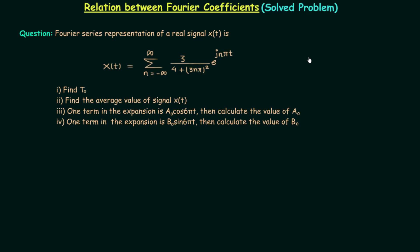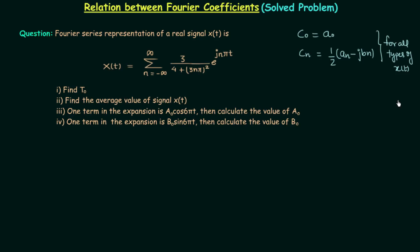In the last lecture we obtained the relation between Fourier coefficients: C0 is equal to A0, and Cn is equal to (1/2)(An - jBn). These two relations are valid for all types of signal x(t), whether real or imaginary. We also found An equals 2 times the real part of Cn, and Bn equals minus 2 times the imaginary part of Cn. These two relations are valid only for real x(t).